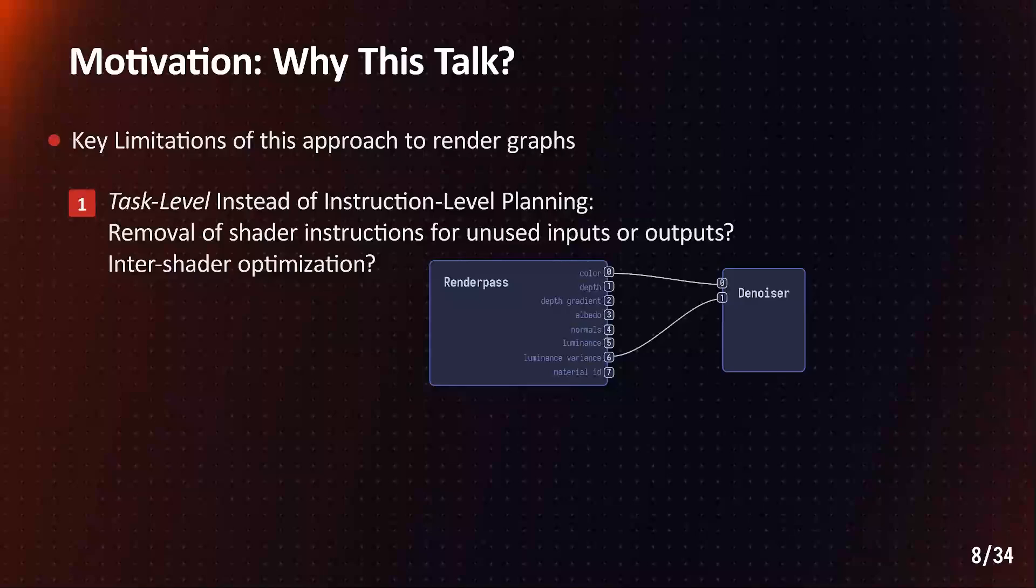To be more precise, such powerful optimizations, for example, include the removal of unused inputs and outputs of shaders in our render passes. This would require an analysis on the instruction level between multiple shaders and API calls, followed by a shader recompilation.